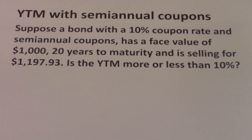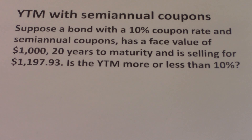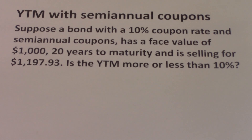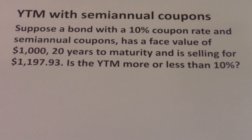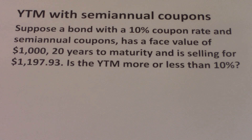This is a semi-annual bond. You can find the yield to maturity using two ways: you can either use the default calculator settings, or you can set the calculator to semi-annual. I'm going to show you how to answer this question using both methods. Remember that the output you get will be different, so you'll need to adjust your answer accordingly.